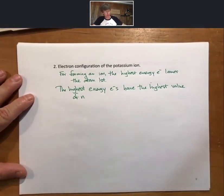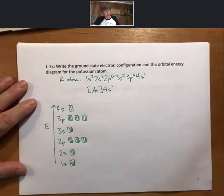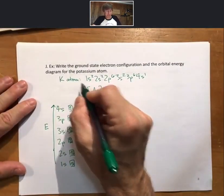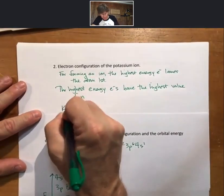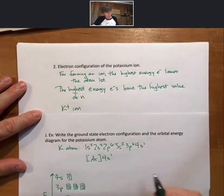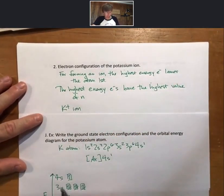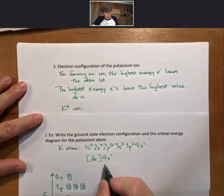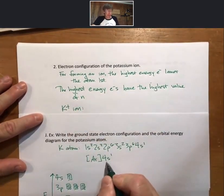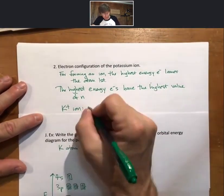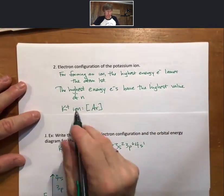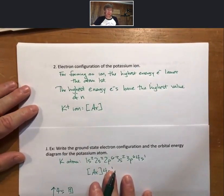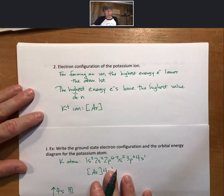Coming back to the potassium atom, as we form the potassium ion K+, it lost one electron — it's going to lose the n=4 electron. With a noble gas core, the K+ ion has the same electron configuration as argon.